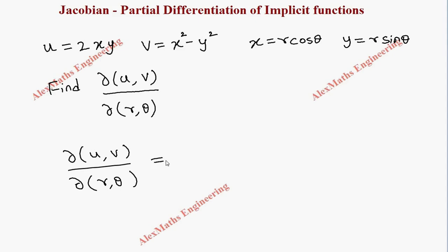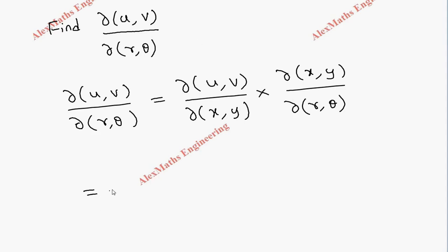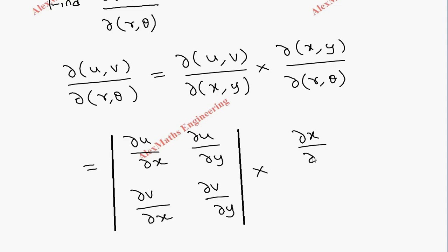This term can be written as ∂(u,v)/∂(x,y) multiplied by ∂(x,y)/∂(r,θ). Now we have two terms, and for both terms we have two separate determinants. The first determinant has ∂u/∂x, ∂u/∂y, ∂v/∂x, and ∂v/∂y. The second determinant has ∂x/∂r, ∂x/∂θ, ∂y/∂r, and ∂y/∂θ.